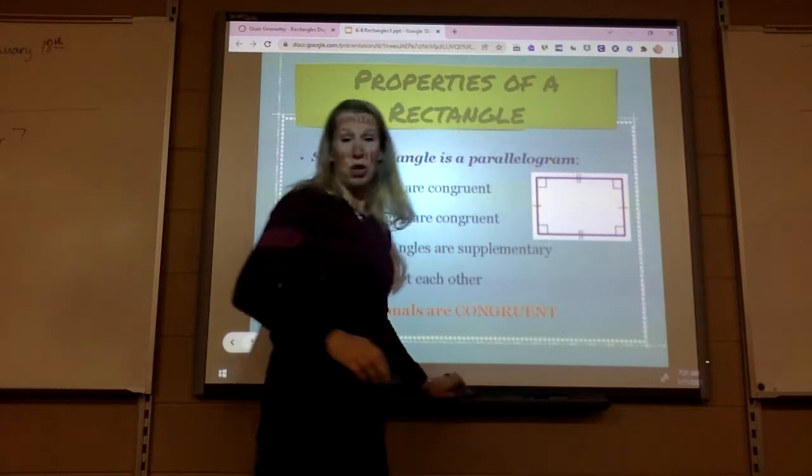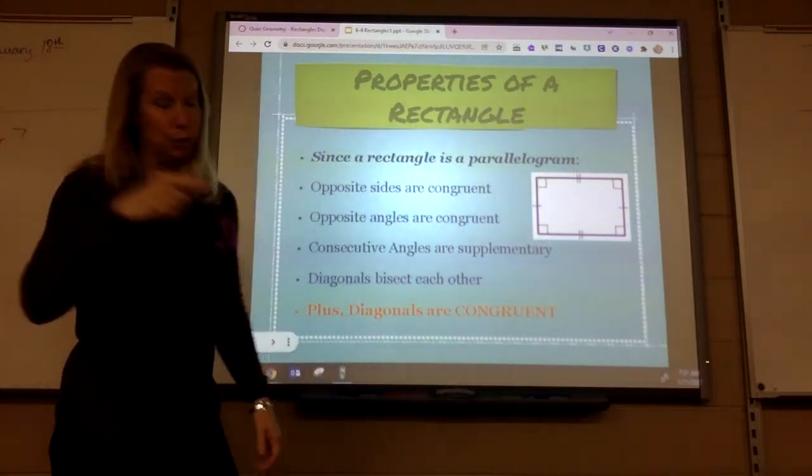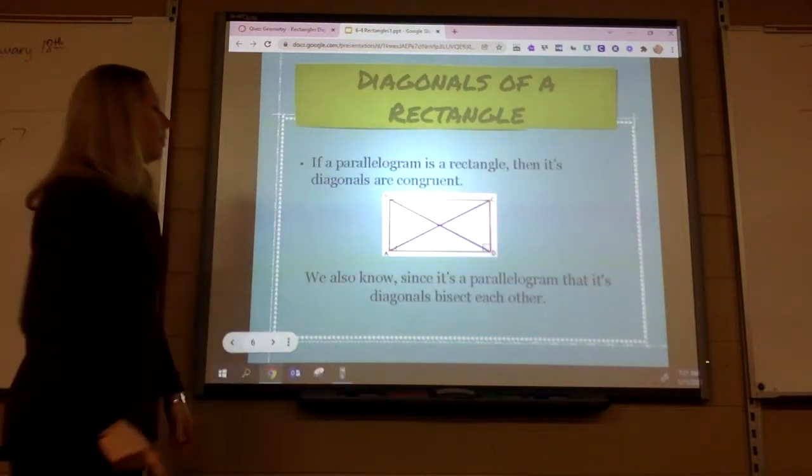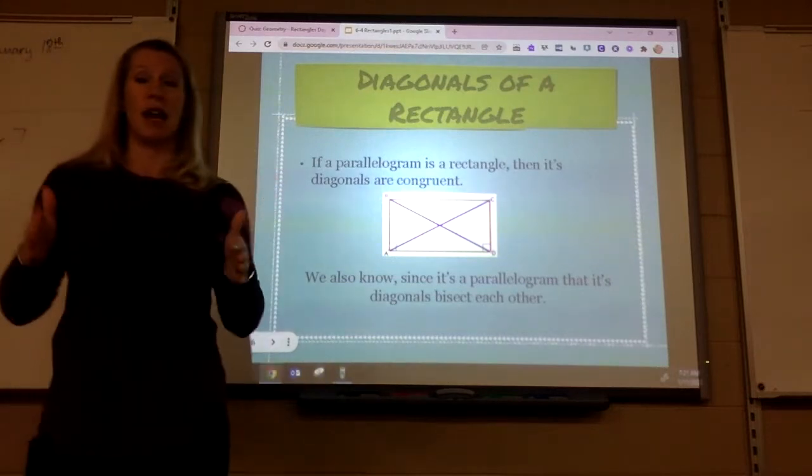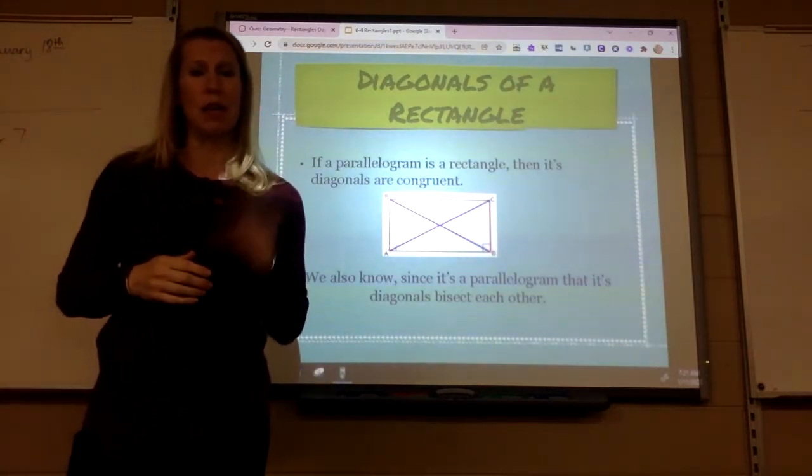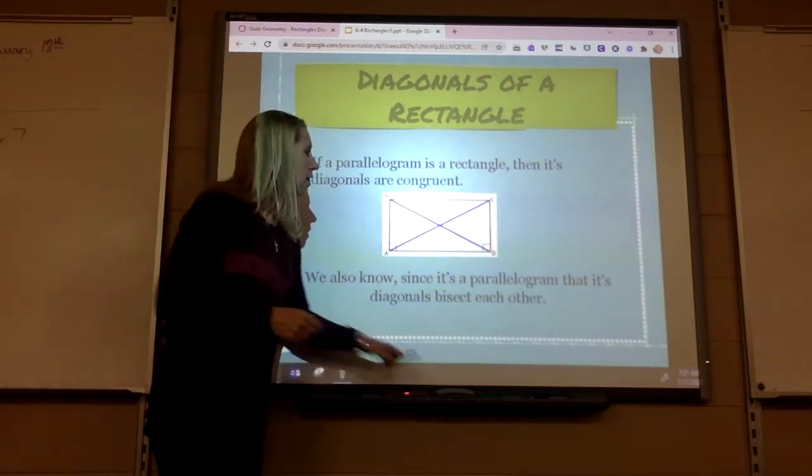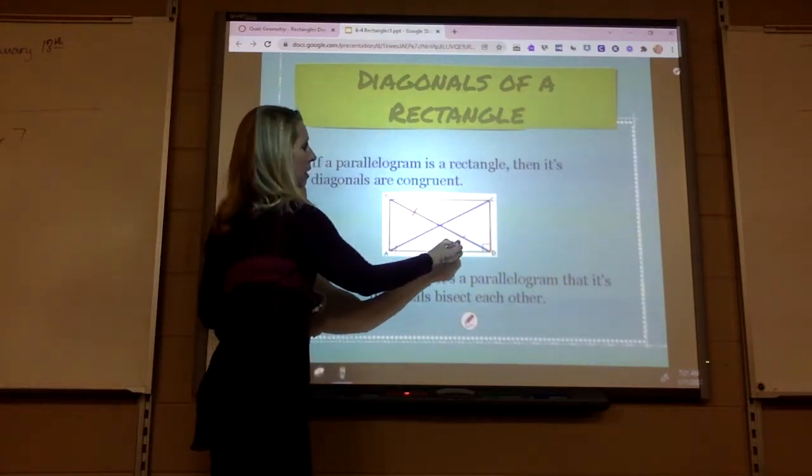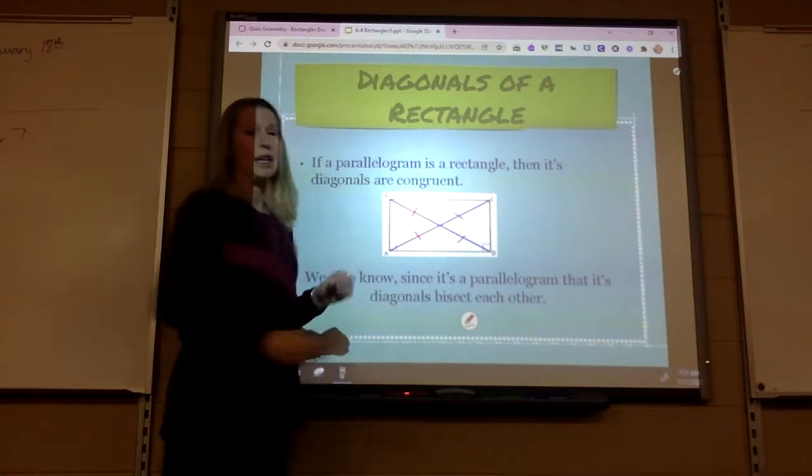He also uses some trigonometry and Pythagorean theorem. So I thought that's pretty cool too. So since the diagonals are congruent and diagonals bisect each other because it's a parallelogram, that's going to mean that every piece in here is equal.